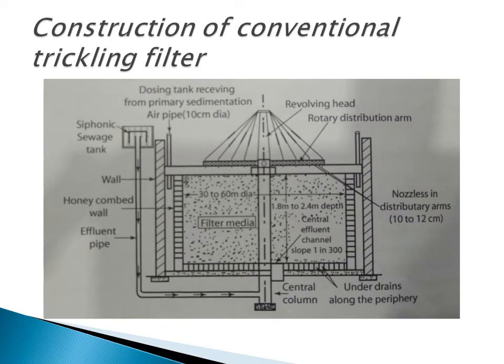This is the construction of the conventional trickling filter. There will be a primary sedimentation tank, from which the sewage is sent to the siphonic dosing tank. From the siphonic dosing tank, through the rotary distribution arms — here you can see the small nozzles — through these nozzles the sewage is sprayed onto the top of the filter bed. There is an air pipe to provide suction ventilation, and the wall is honeycomb-type to provide suction aeration and circulation of air. The rotary distribution arms are attached to a central shaft in the center, which is rotated by means of an electric motor, so the arms also get rotated.